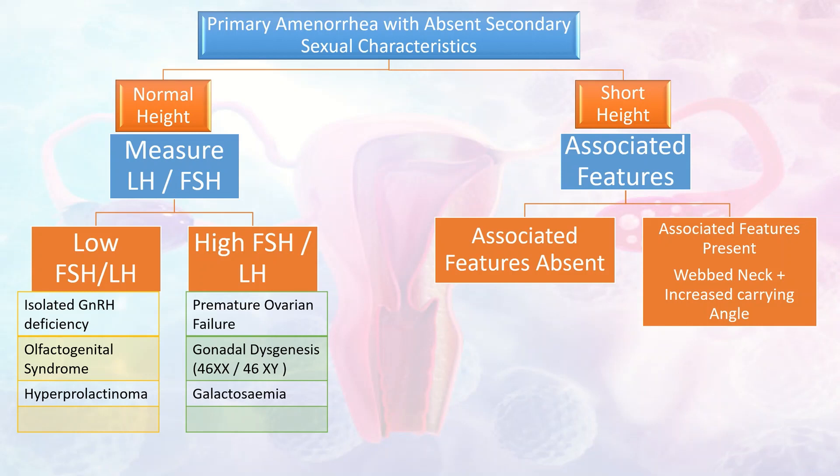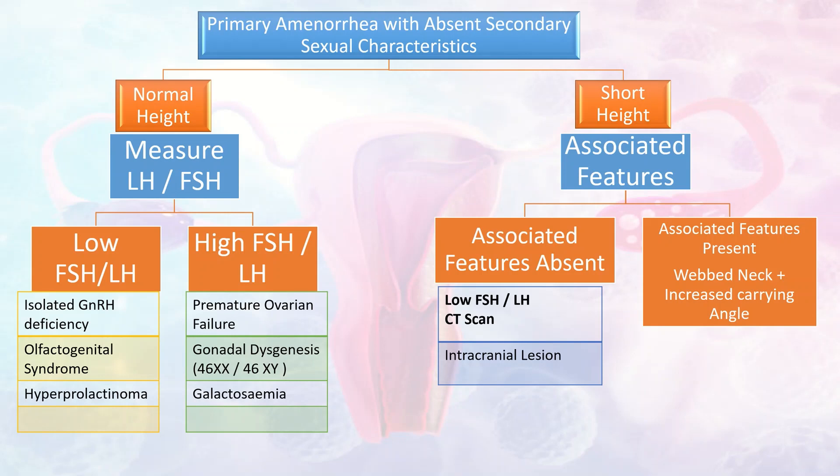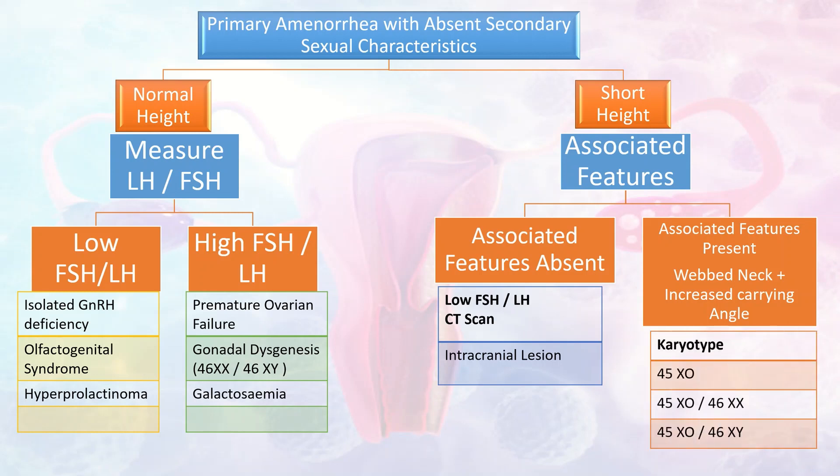When associated features are absent, we check FSH and LH levels, which are usually low, and we advise a CT scan to diagnose intracranial lesions. When these associated features are present, we perform karyotyping to diagnose conditions like 45XO, 45XO/46XX mosaic, and 45XO/46XY.